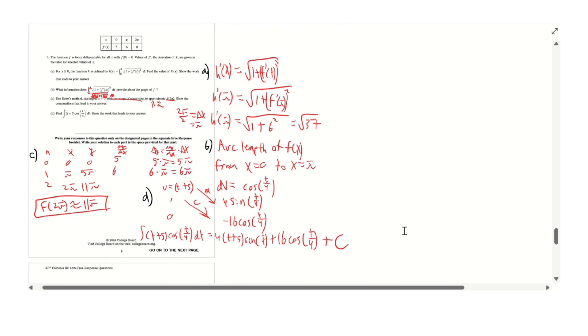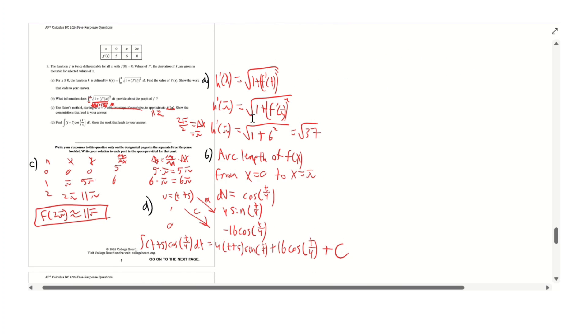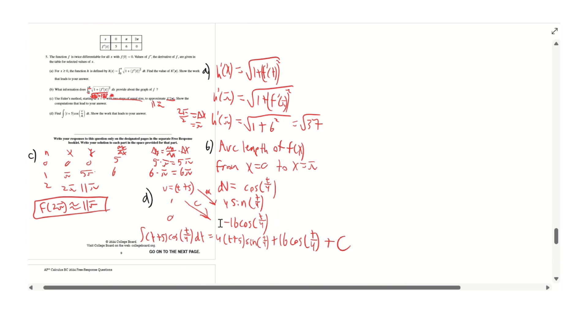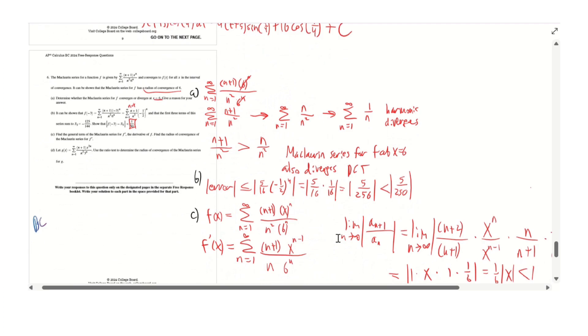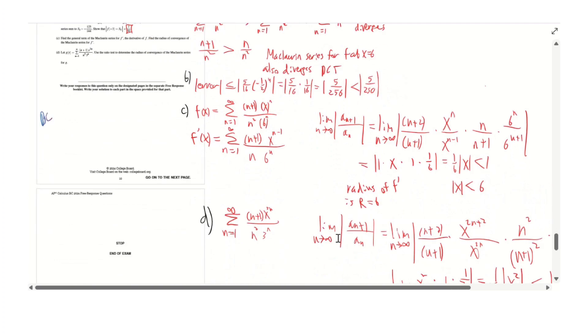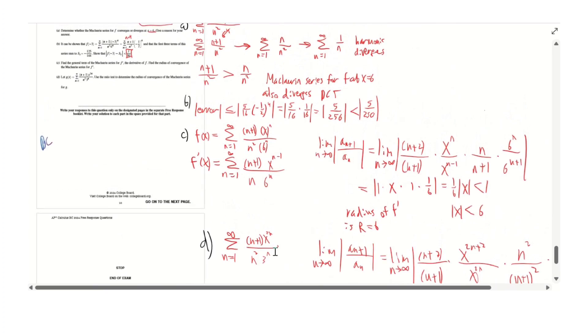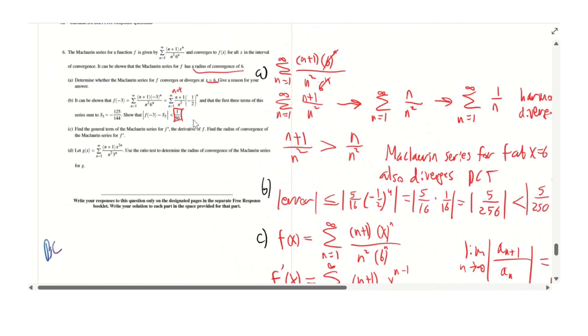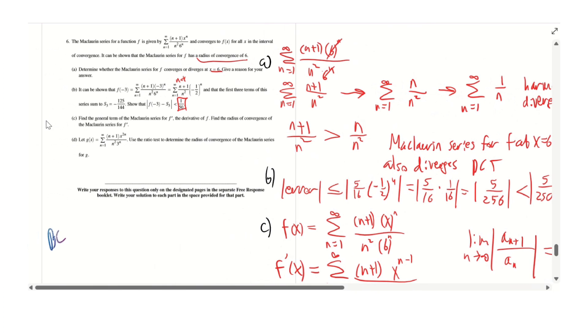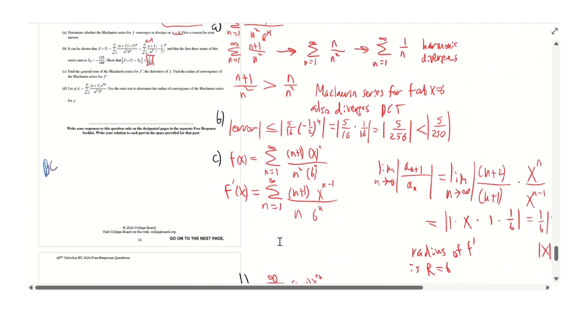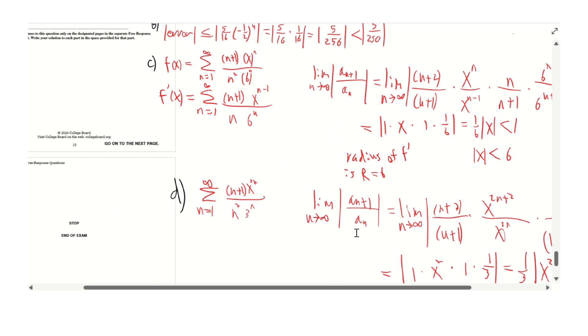This is BC only - easy. Part A is just taking the derivative using second fundamental theorem of calculus. Part B is arc length if you recognize the formula. Part C is just Euler's method, and D is the table method for integration by parts. For question 6, I messed up on part D because I did the ratio test incorrectly - the correct answer is root 3, I got infinity.